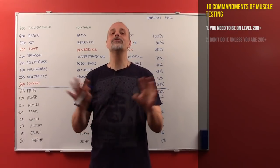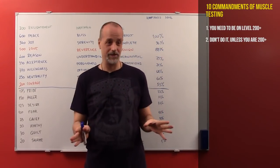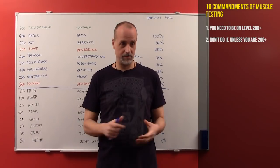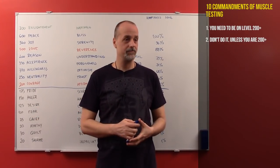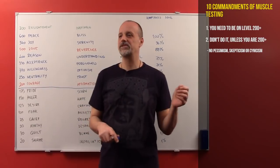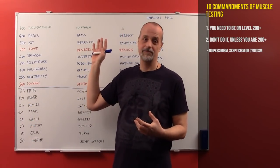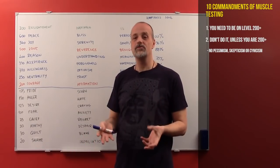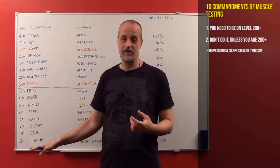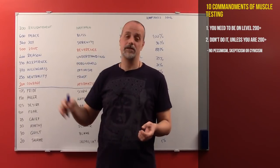Rule number two: you do not do muscle testing if you are below the line of 200 — it is that important. No measurement taken when you are below the threshold of 200 is accurate; it is at least unreliable. So no pessimism, no skepticism, and no cynicism. Because all those attitudes — 'yeah, sure, right, that's going to work' — come from insecurity, not confidence. That's a very good test to take for yourself to see if you are on the upper part of the scale or not.